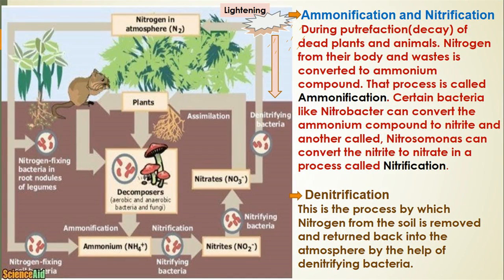Ammonification and nitrification: during putrefaction, also known as decay or decomposition, of dead plants and animals, nitrogen from their bodies and waste is converted to ammonium compounds — a process called ammonification. Certain bacteria like Nitrobacter can convert the ammonium compound to nitrite, and another called Nitrosomonas can convert the nitrite to nitrate in a process called nitrification.